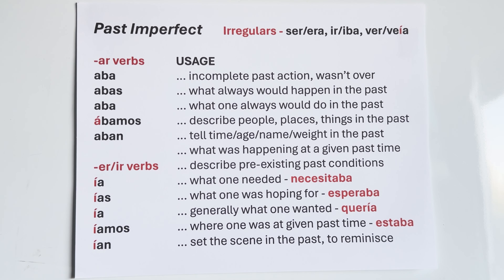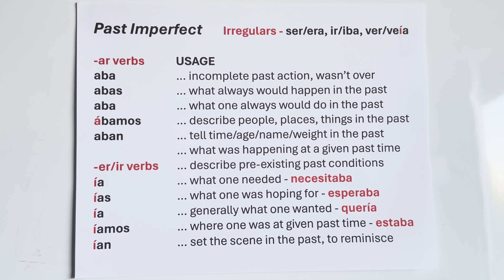For ER and IR imperfect endings: ía, ías, ía, íamos, ían — there's an accent on the I all the way down to break up the diphthong and make it two separate sounds. With íamos we have three syllables: I, A, MOS. The I accent breaks up the diphthong. The accent on the A of ábamos — like estábamos — is because it breaks both rules of pronunciation.